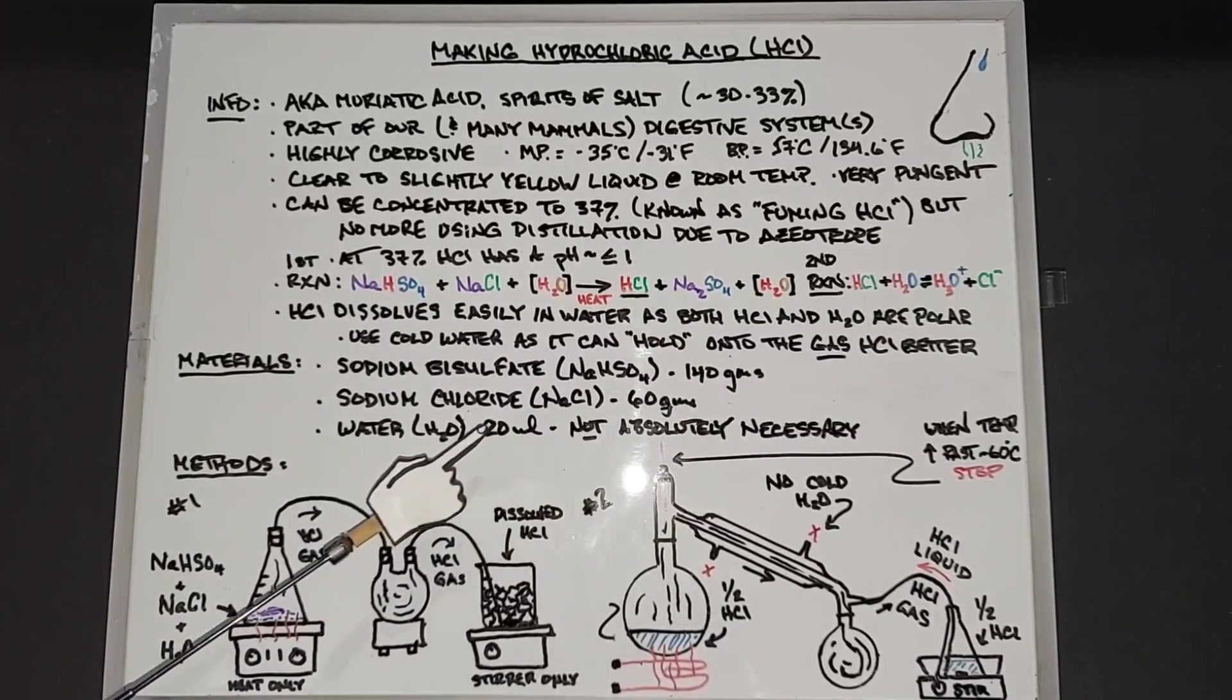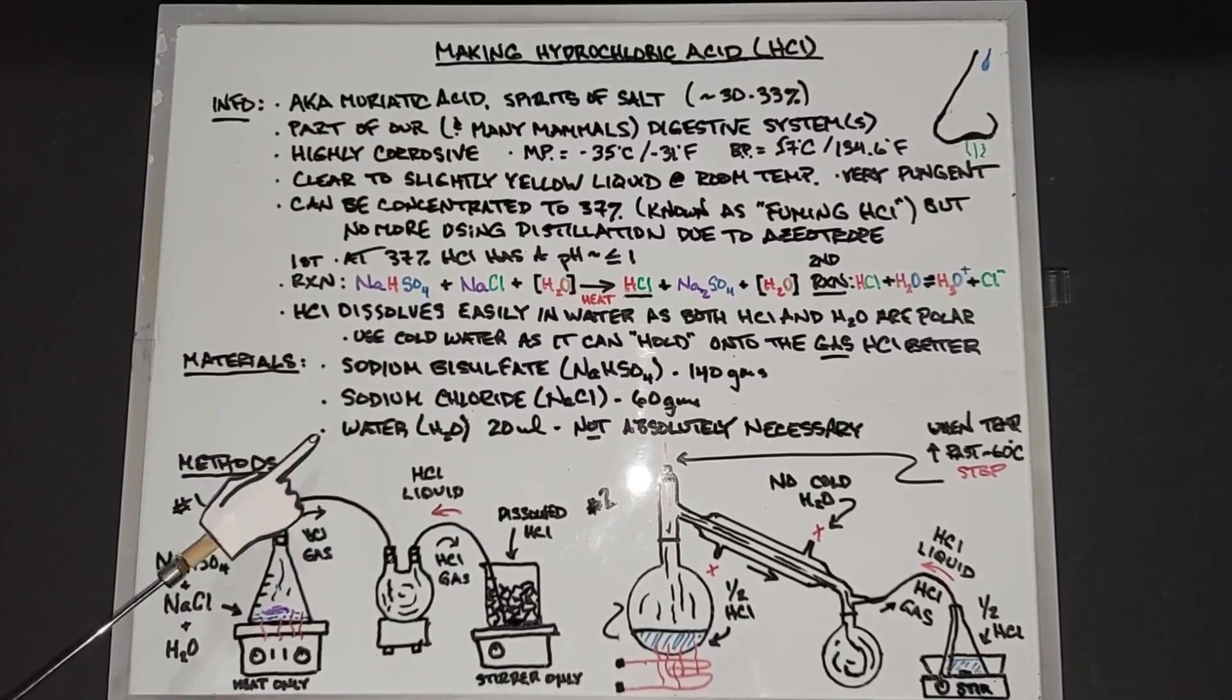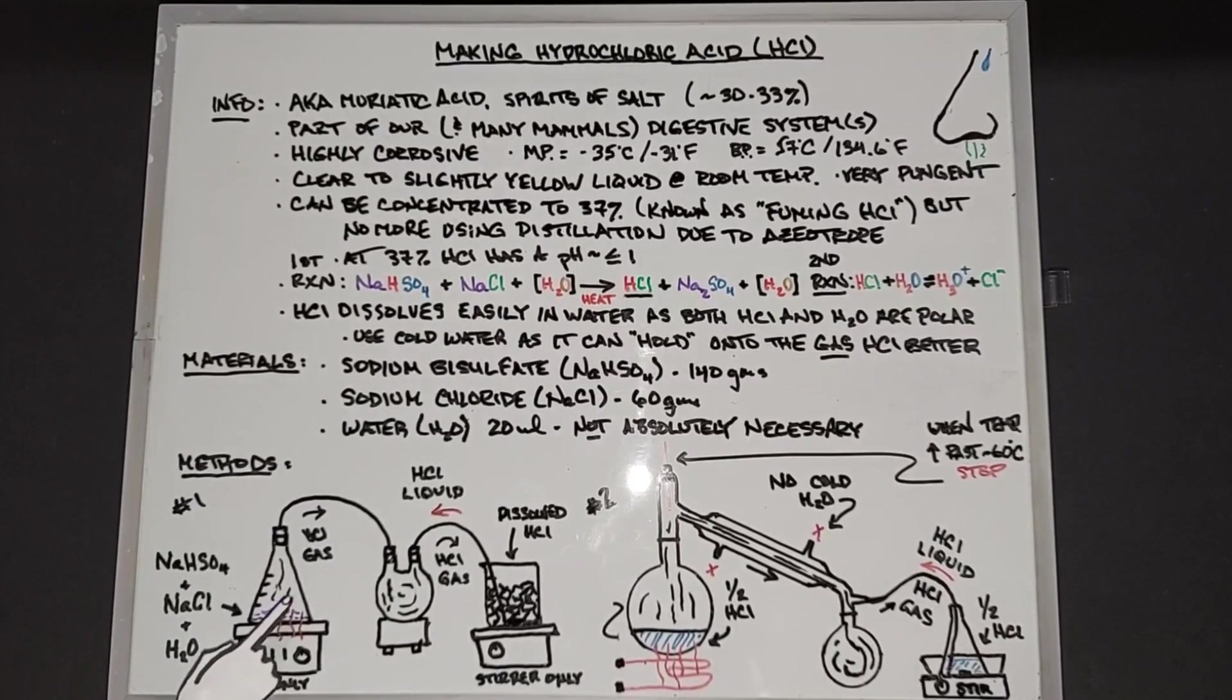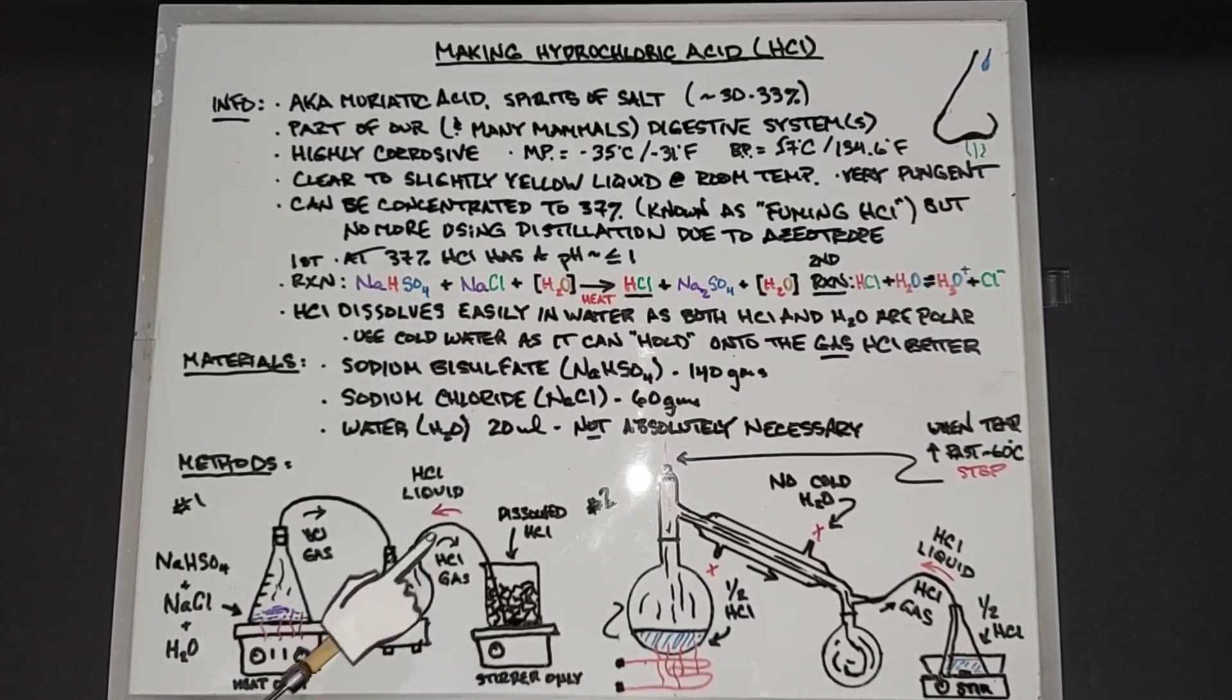In our methods we're going to take all three of these, the sodium bisulfate, the sodium chloride salt, and the water and put them into our flask right here. That will be connected through tubing and sealed to a round bottom flask which has two necks, and that second neck will be connected through tubing into this beaker which is full of ice and a little bit of water.